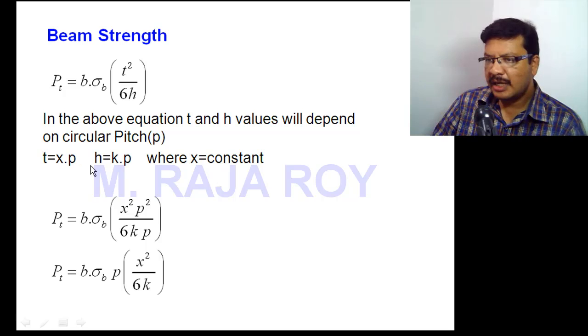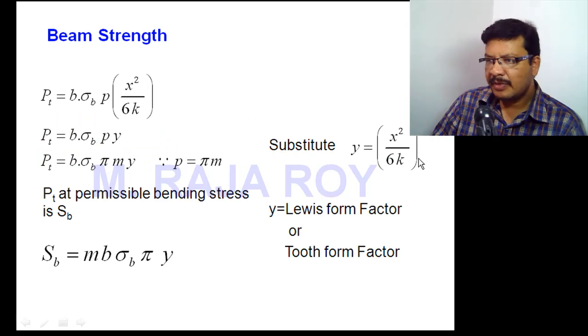Now you substitute this t and h values in this equation. Then automatically you will get, this is x²p²/6k into p. Then, now you will get one p remains here. Other circular pitch value cancels. Then you will get Pt equal to b into sigma b into p into this value. Now this constant value, now I am calling as some y. This constant I am calling as y. This is tooth form factor or Lewis form factor. This y you can call as Lewis form factor or tooth form factor.